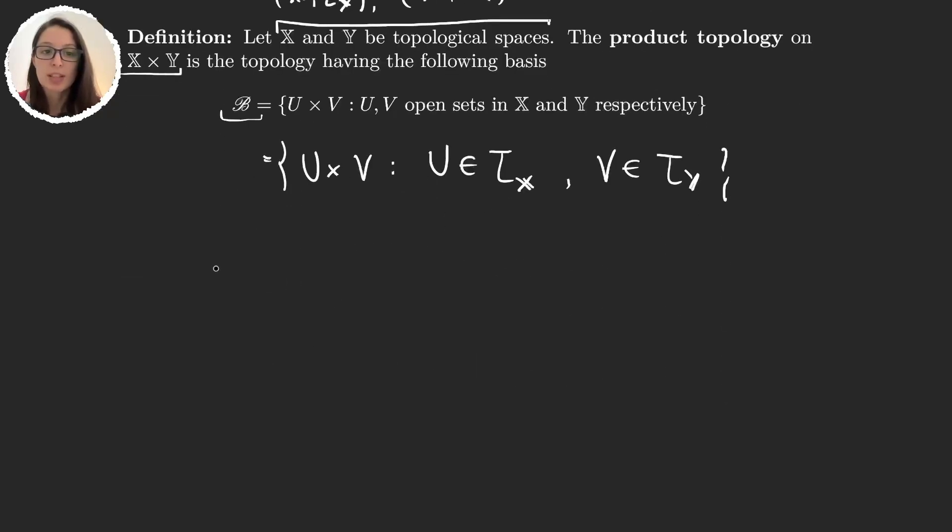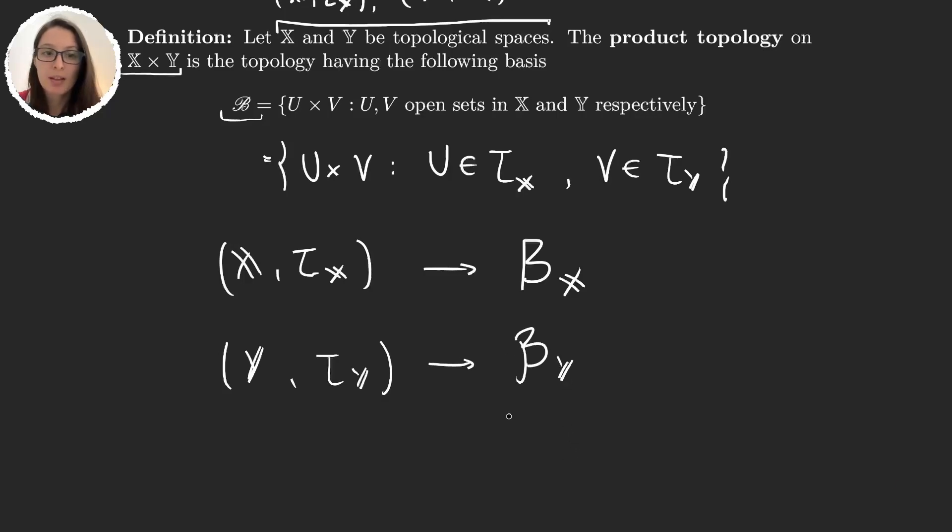there is one famous result that says that if we have x with its topology being generated by some basis bx, and the same for y with its own topology being generated by a basis by, then the basis for the product topology is actually the product u times v for the elements of the basis: u in bx and v in by.